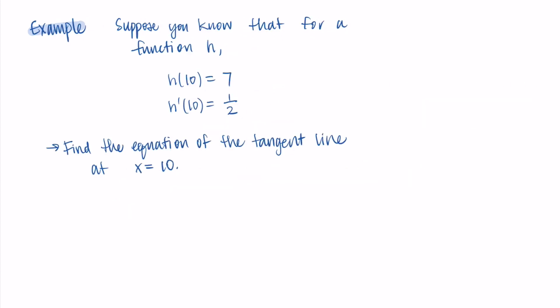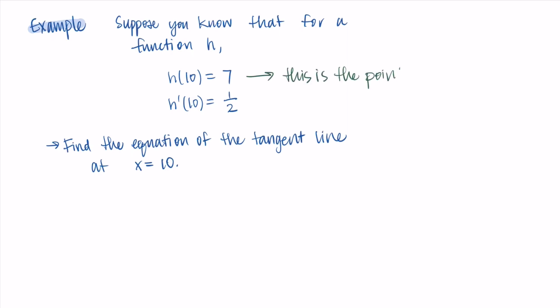Okay, so for writing this equation we need to interpret the information we were given. First, I just want to note that h(10) = 7 corresponds to the point (10, 7), so 10 is the x, 7 is the y. Then h'(10) = 1/2. This means this is the derivative at 10, or the slope of the tangent line at x = 10.